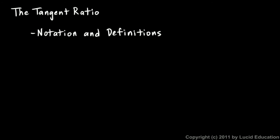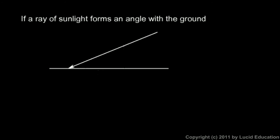In this video we will talk about the tangent ratio and we'll start out with some notation and definitions. First imagine a ray of sunlight coming in and striking the ground. That line at an angle is incoming sunlight and this is the ground, and we'll assume it's perfectly horizontal.